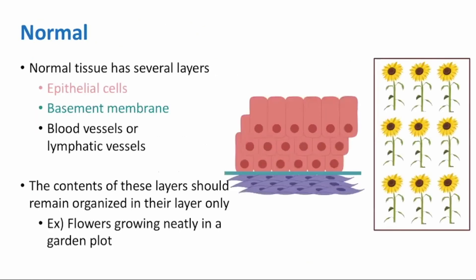Normal tissues have several layers. In case you come across them, they include epithelial cells, basement membranes — which separate epithelial cells from the tissue underneath — and blood vessels or lymphatic vessels. The contents of these layers should remain organized and only in their layer. Here, the flowers in the garden plot represent organized epithelial cells growing neatly. The fence around the plot represents the basement membrane, or the border, keeping the flowers where they belong.